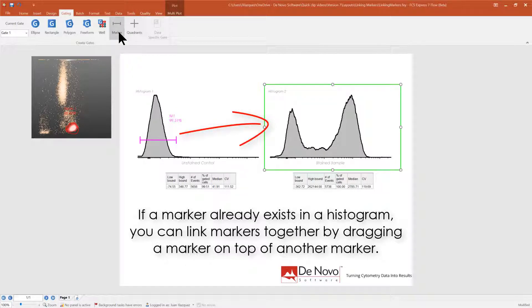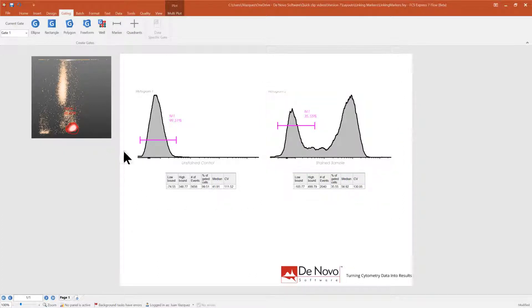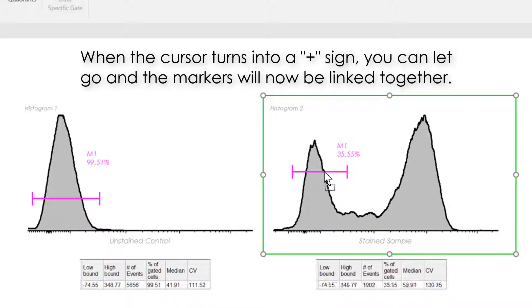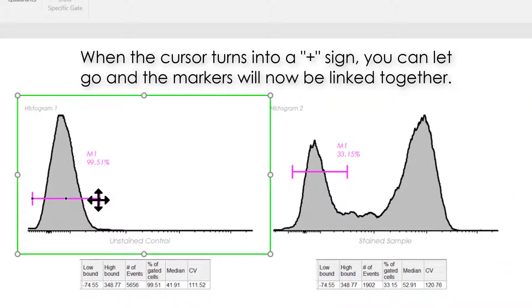If a marker already exists in a histogram, you can link markers together by dragging a marker on top of another marker. When the cursor turns into a plus sign, you can let go, and the markers will now be linked together.